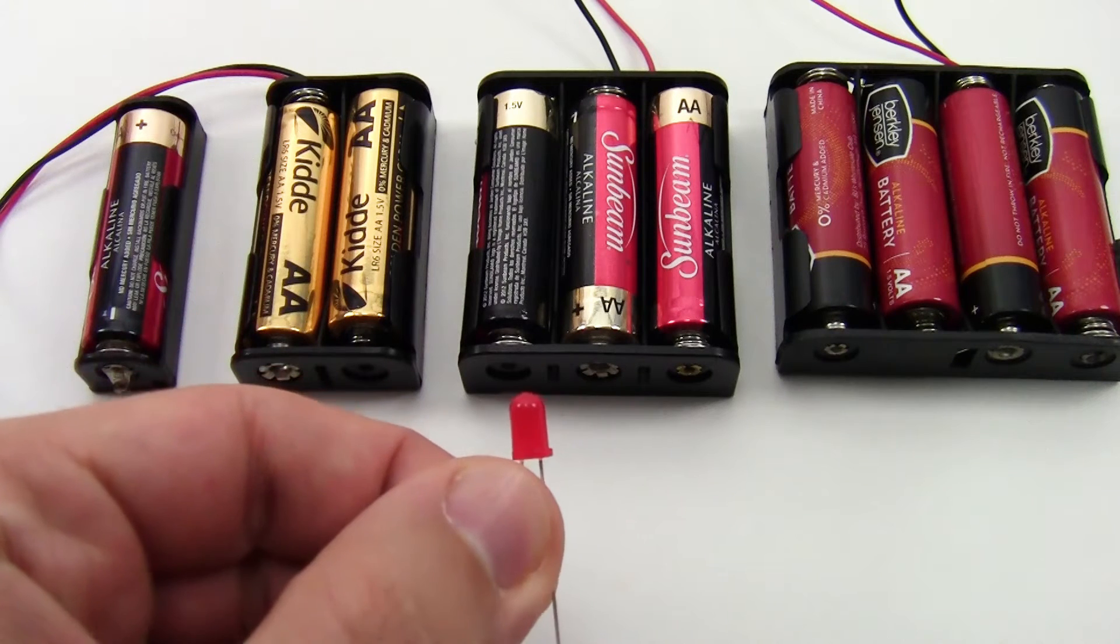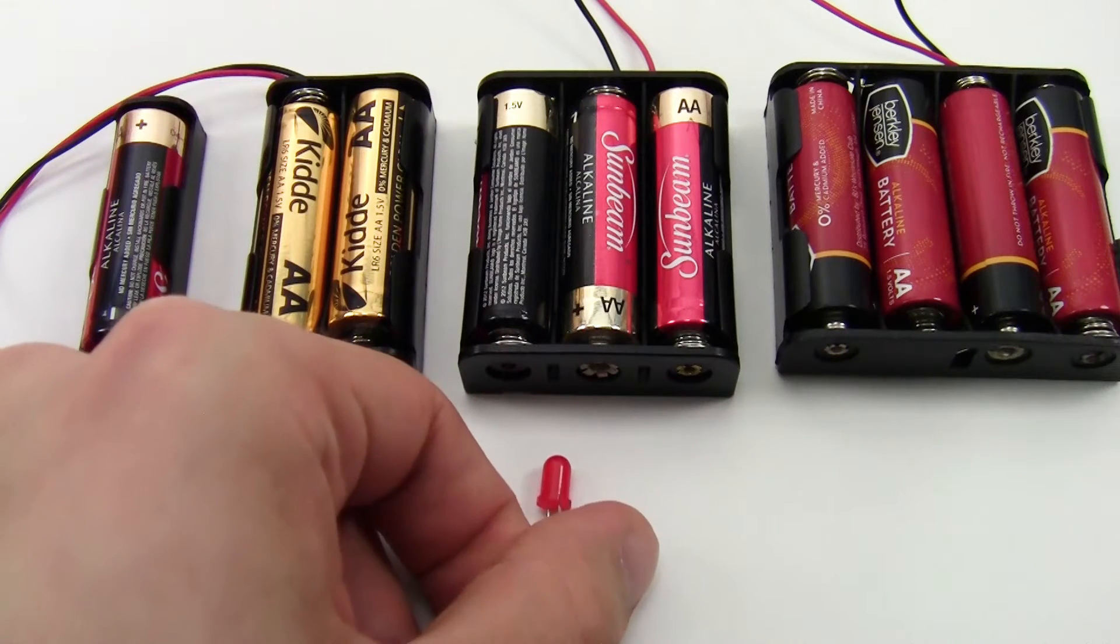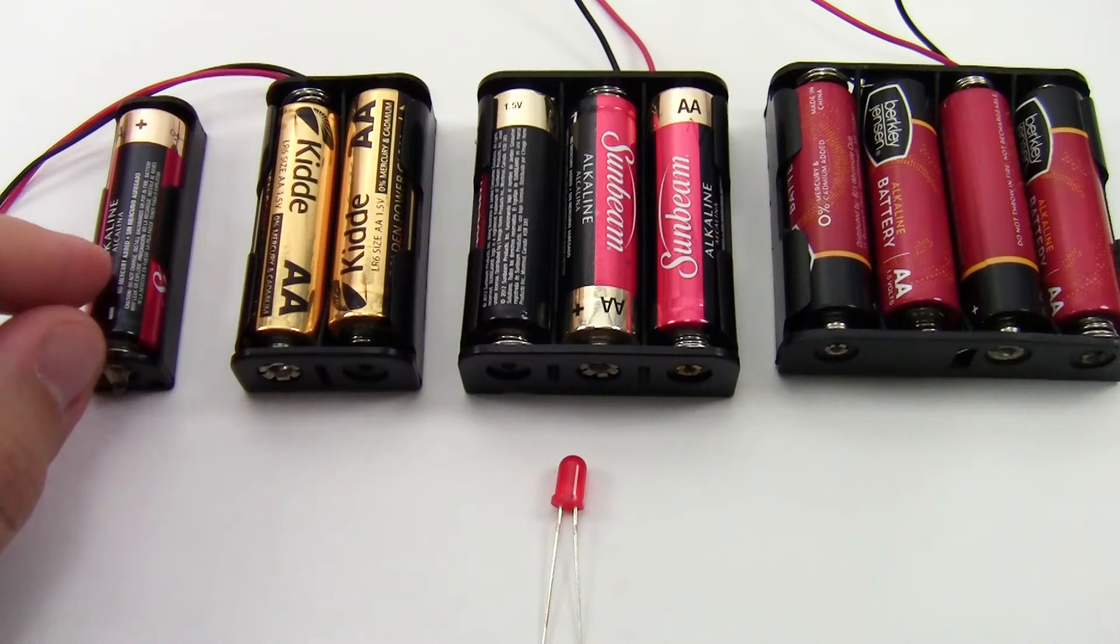I'm going to use this red LED as an example which is rated at 20 milliamps and 2 volts. Now there are many other types of batteries available like 9 volts or coin cells, but I'm going to use these AA battery holders as an example.